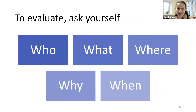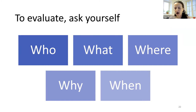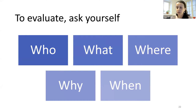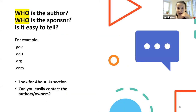To evaluate information, pretend you're a journalist and think about the five W's: who, what, where, why, and when. This is one of our key takeaways for today — think about these five questions when you encounter information. It applies to information on the internet but also any type of information, whether in print, the newspaper, on the radio, or even in conversation. These are just questions to help you be more critical about the information you encounter.